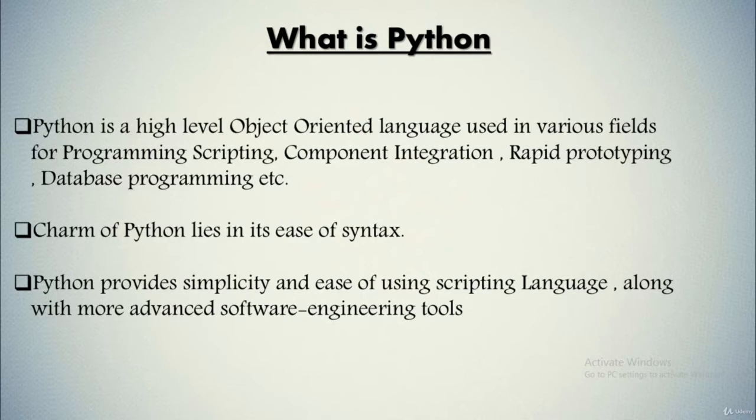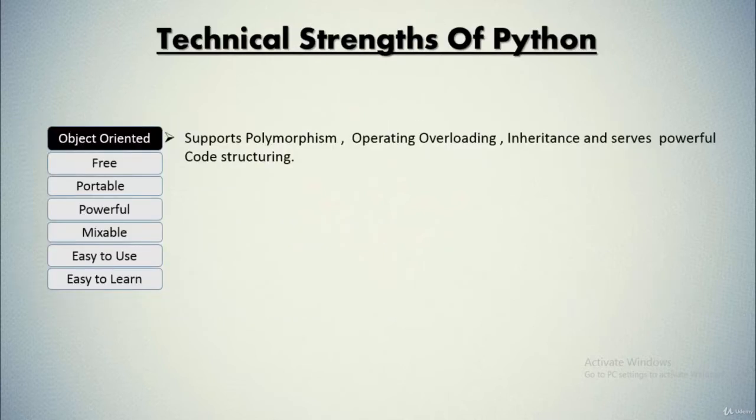Let's talk about its technical strengths. The first strength is its object-oriented nature. Python supports polymorphism, operator overloading, inheritance, and provides powerful code structuring. It supports object-oriented style or technique of programming which encapsulates code within objects.